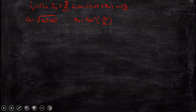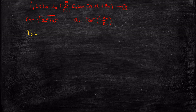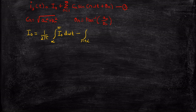Now let's find the value of i_0, the average output current. i_0 can be written as (1/2π) times the integral from α to 2π of i_out d(ωt), minus the integral from π+α to 2π of i_out d(ωt). The α to 2π limits arise because at α we trigger thyristor 1. Simplifying this expression gives zero — so i_0 is equal to zero.